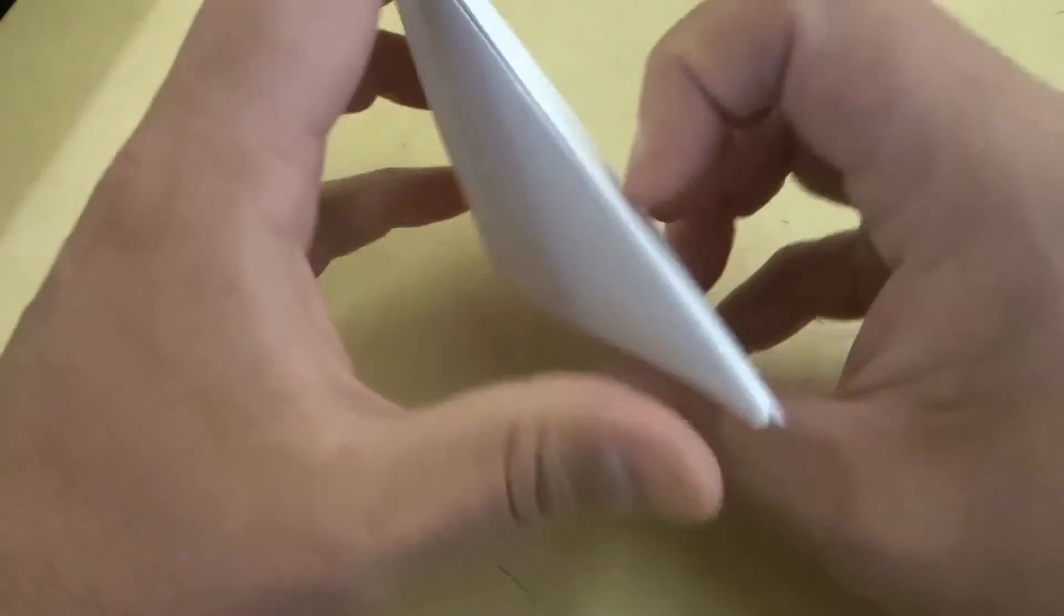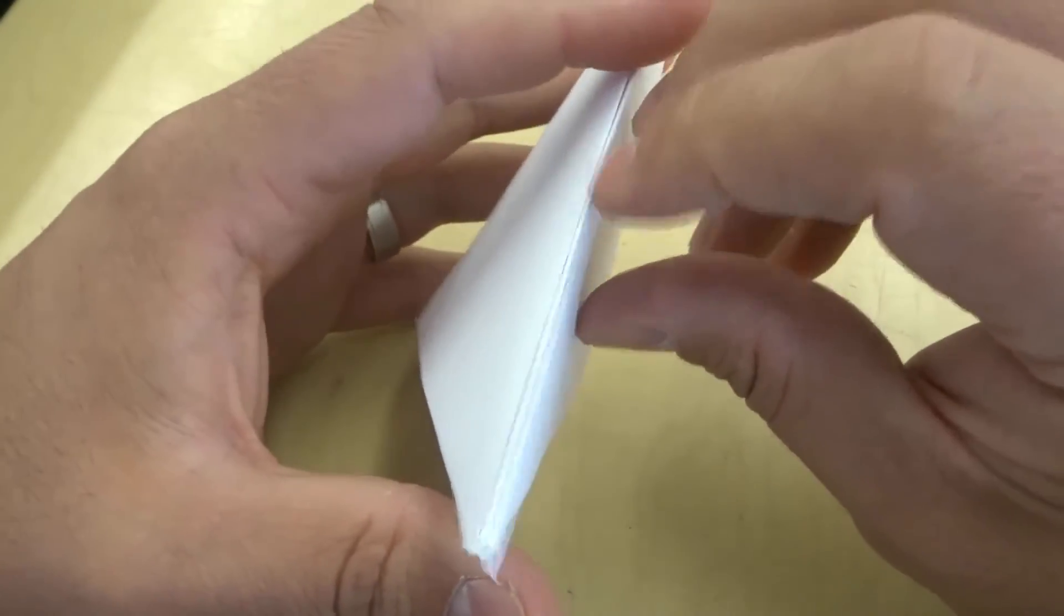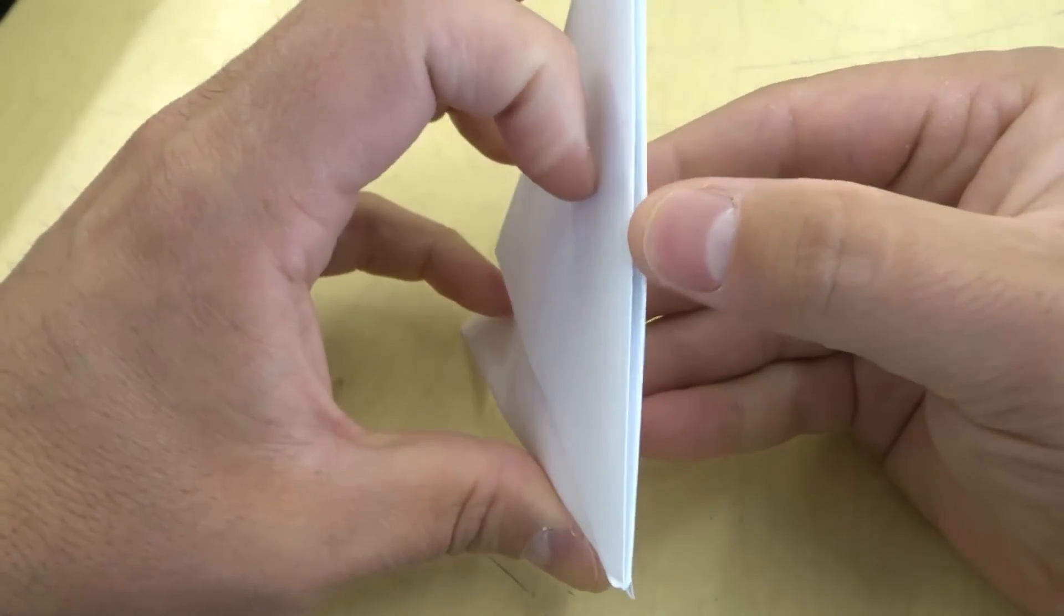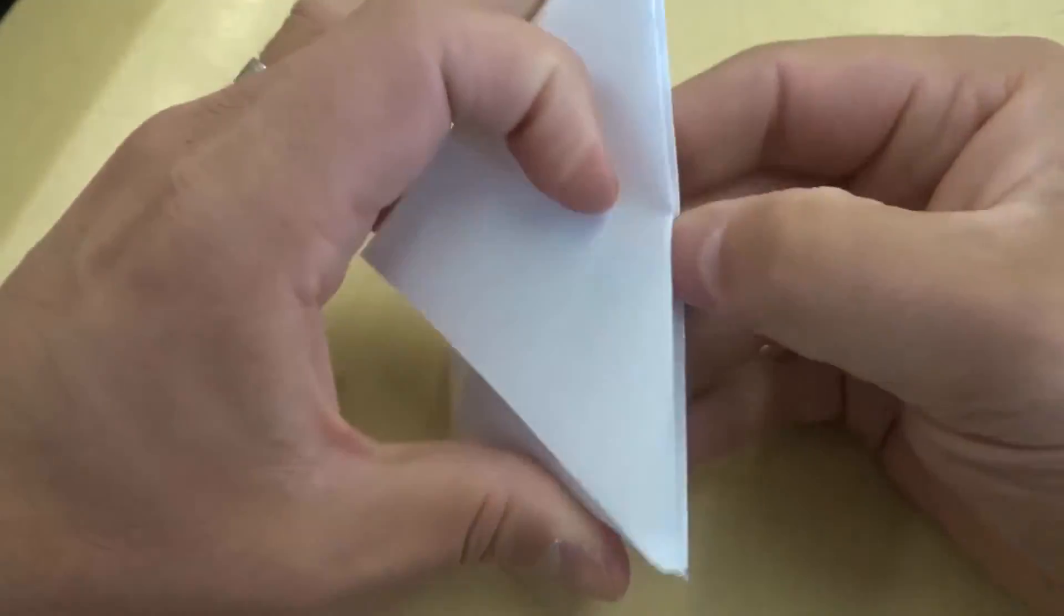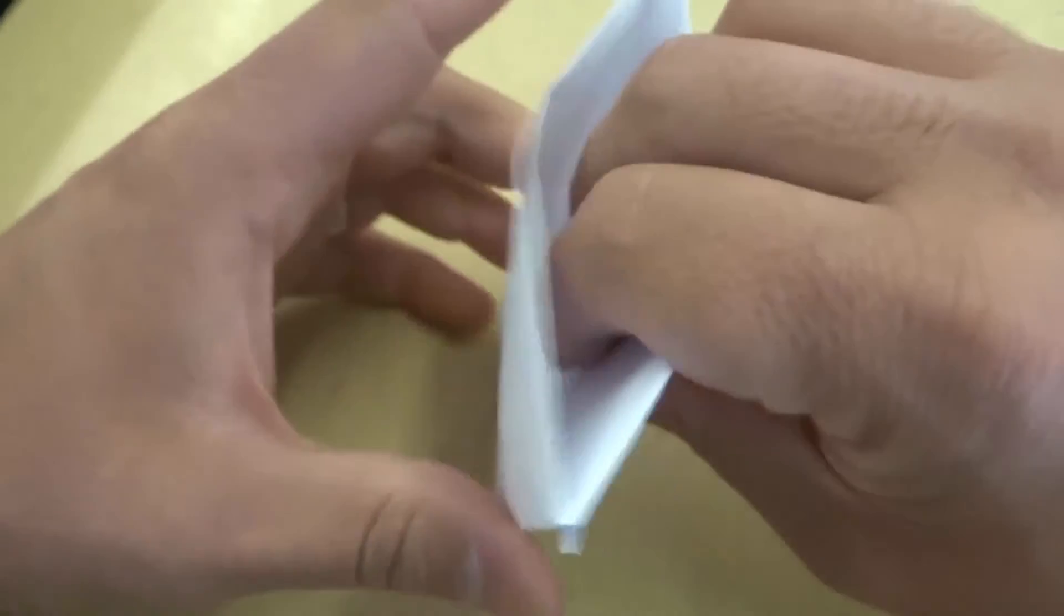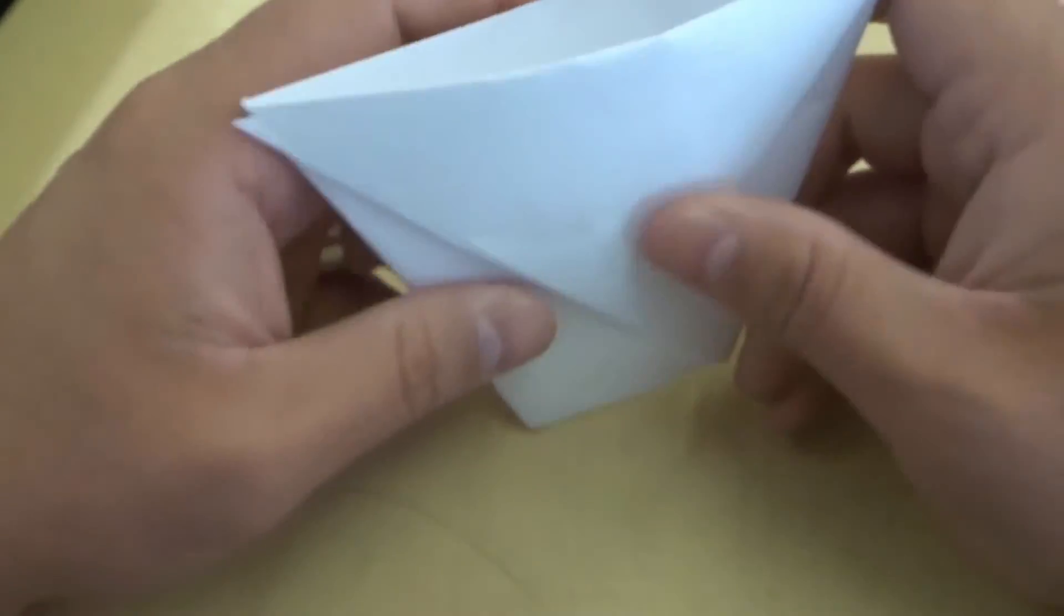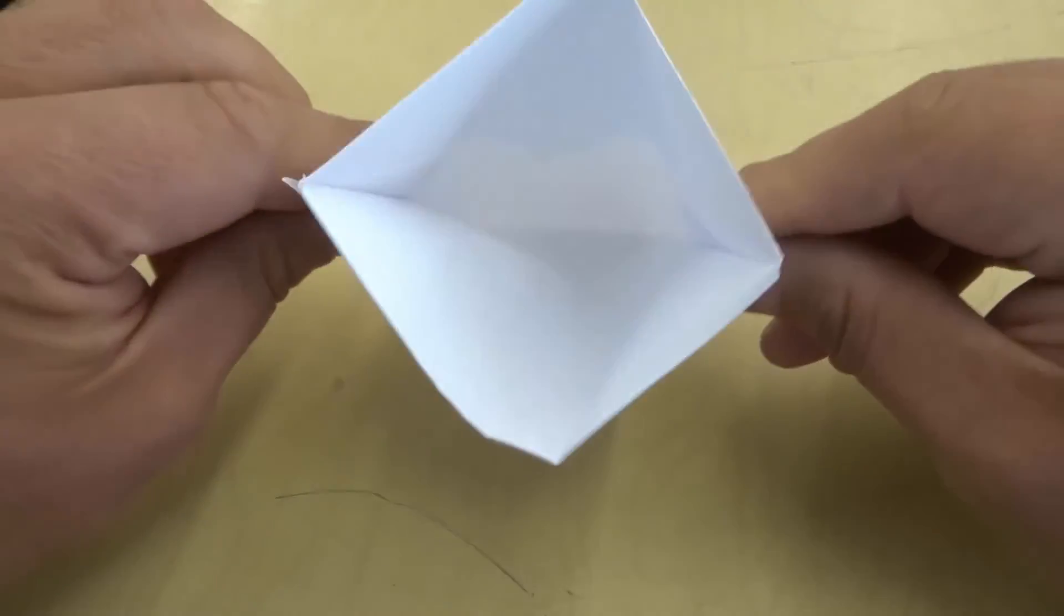And that's it. We have our paper cup. Now we can open it up like this. If you look there's an opening right here. Let's just open it up. One more time I'm just gonna... there we go. Just have to bend it out a little bit. And that's it. We now have our paper cup.